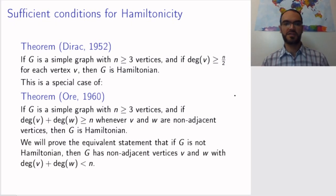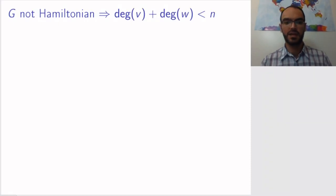We will prove Øre's theorem by proving the equivalent contrapositive statement: if G is not Hamiltonian, then you will be able to find two vertices that are not adjacent such that the sum of their degrees is less than n. This is what we will prove. If the graph is not Hamiltonian, then we will find such vertices. We need to prove that v and w are not adjacent, meaning there is no edge between them.